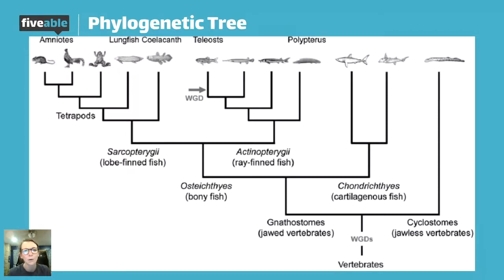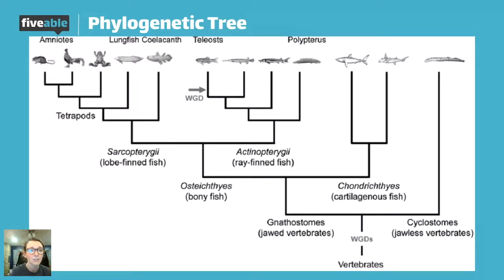If you look at teleosts, those two fish also look closely related based on their arch, and they definitely have a most recent common ancestor — you can see where the arrow points to WGD. Their intersection point is just a little bit further back in time than the amniotes, and I can tell because it's further down the page. However the tree is oriented, how close the intersection point is to the edge shows how recent that common ancestor was.